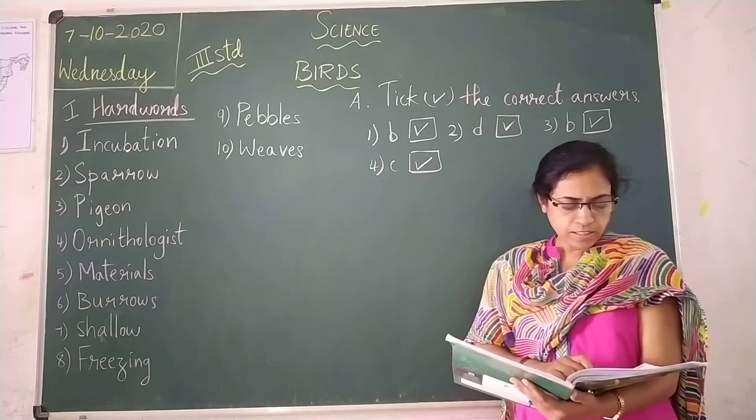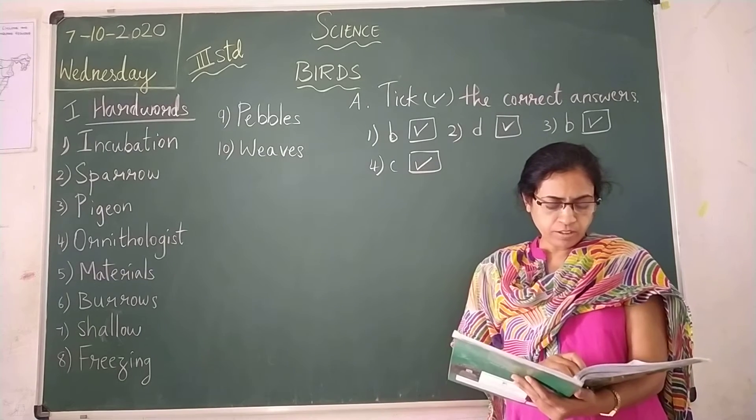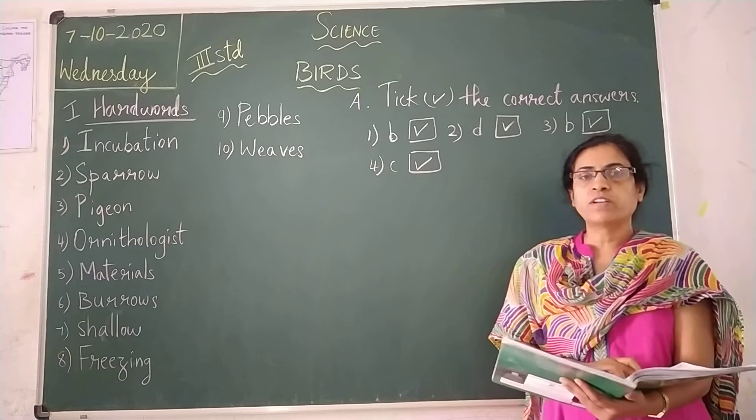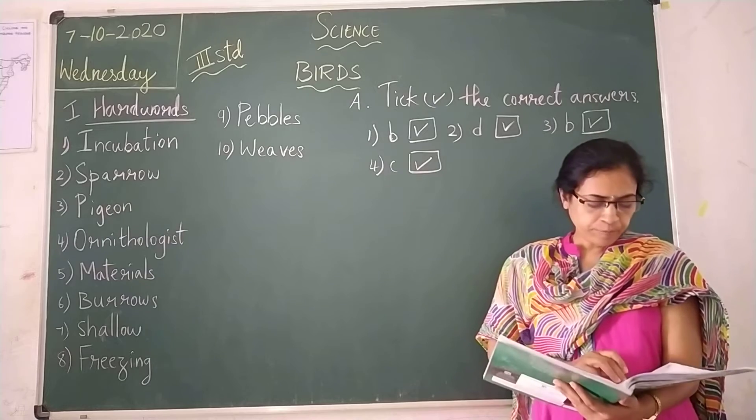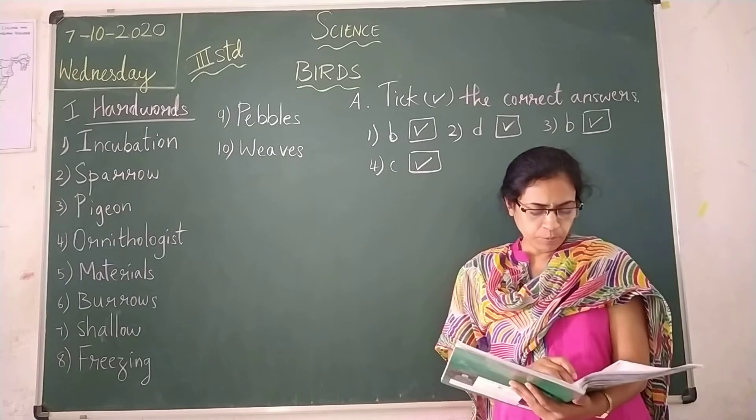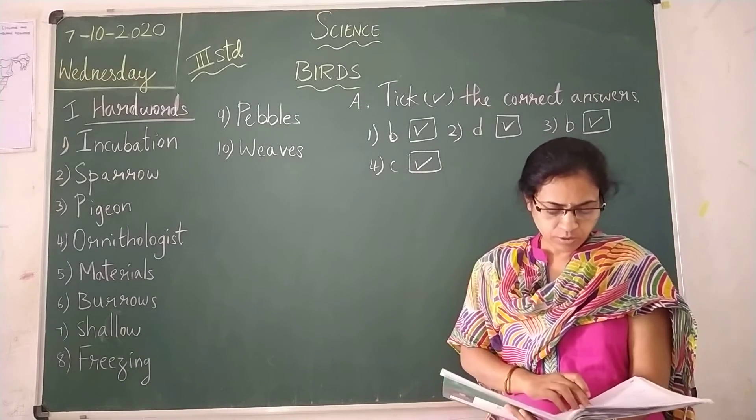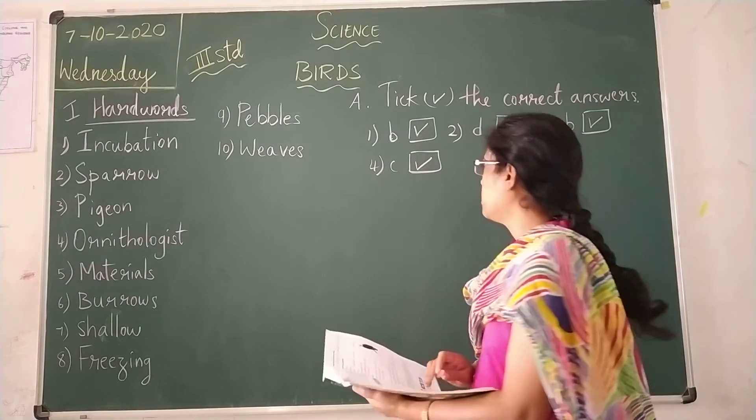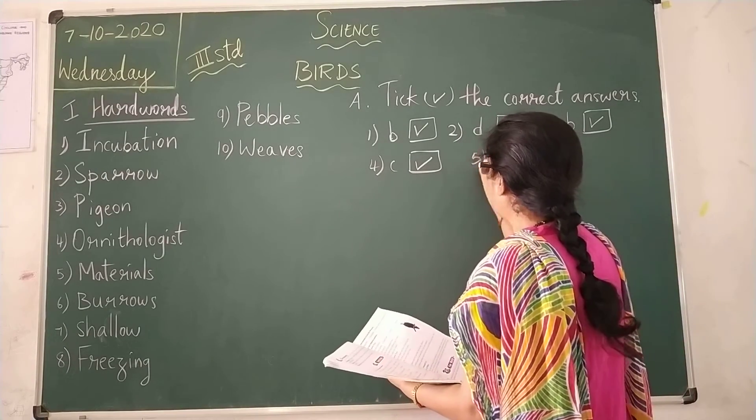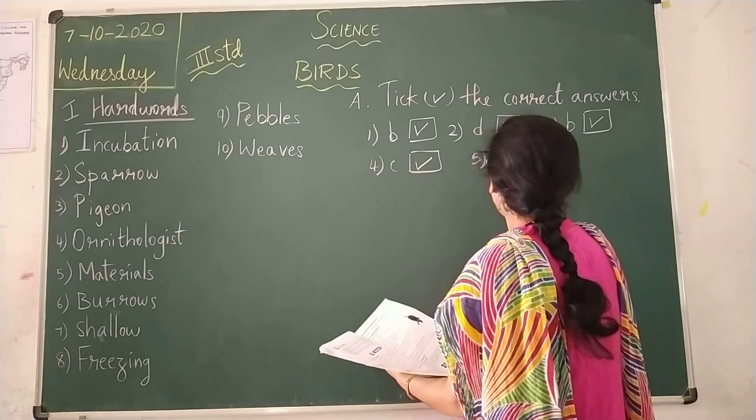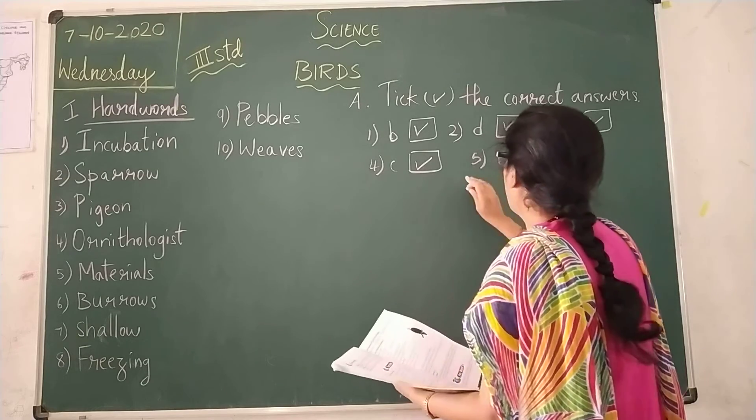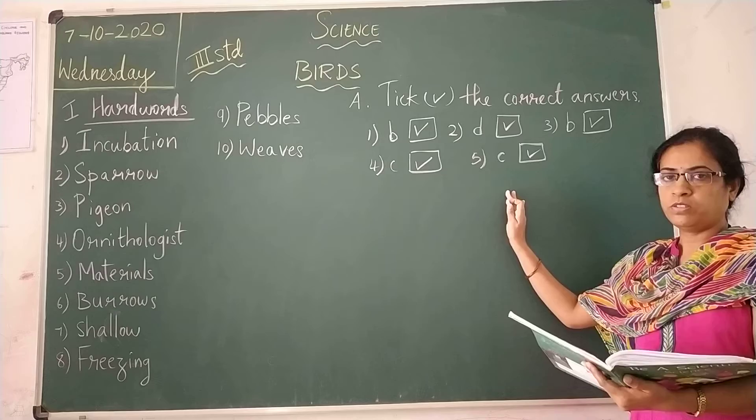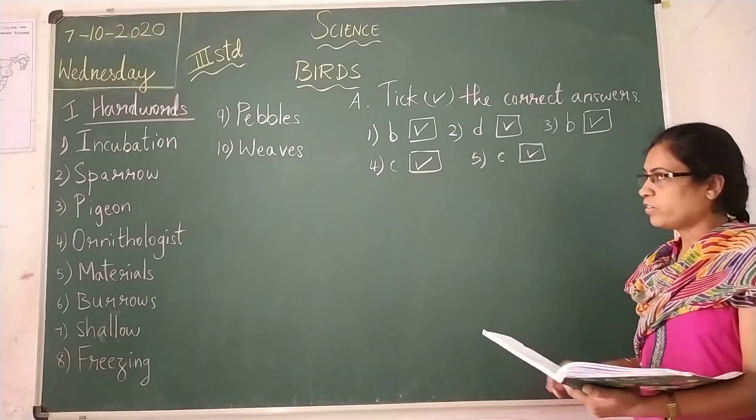And then, fifth one, this bird uses its beak to peck into the tree trunk. This is also very easy you can just guess the answer then. Eagle, penguin, woodpecker, weaver bird. So, which is the answer children? Option C is the correct word. That is, woodpecker. So, you have to tick this in your textbook. Don't need to write in the classwork. Okay.